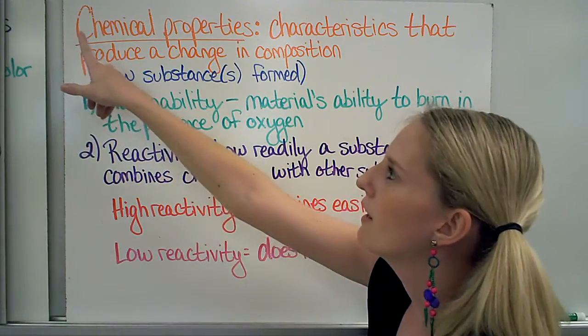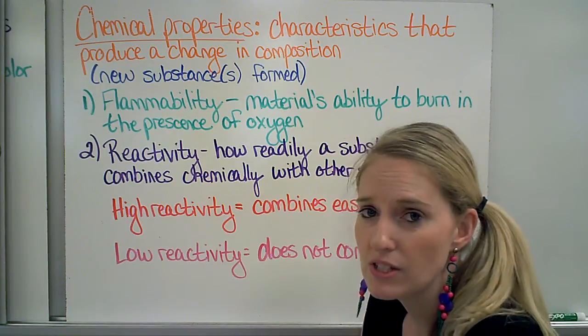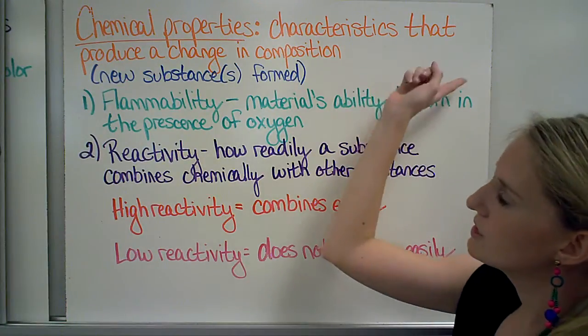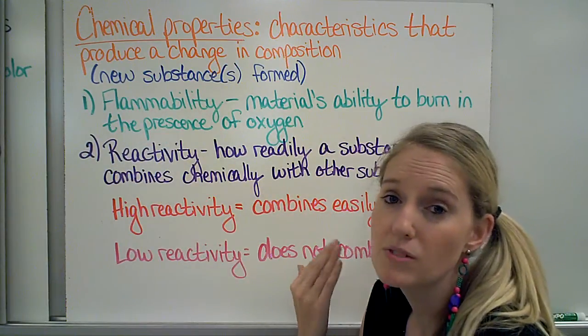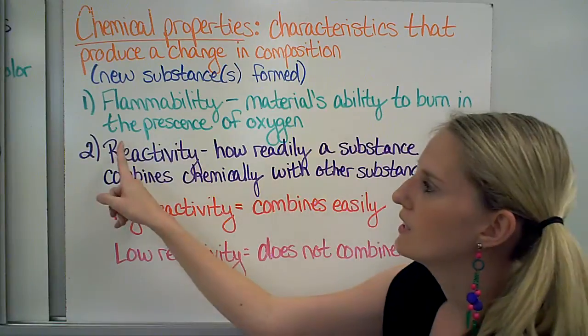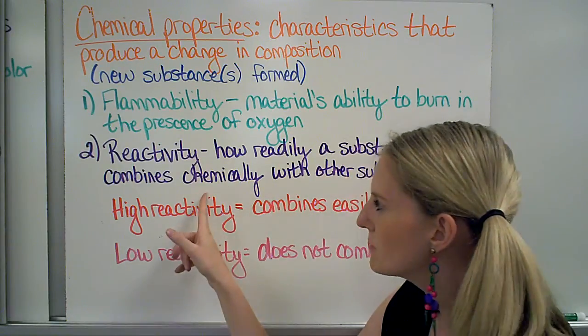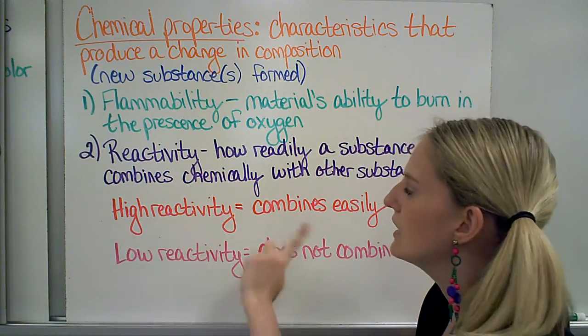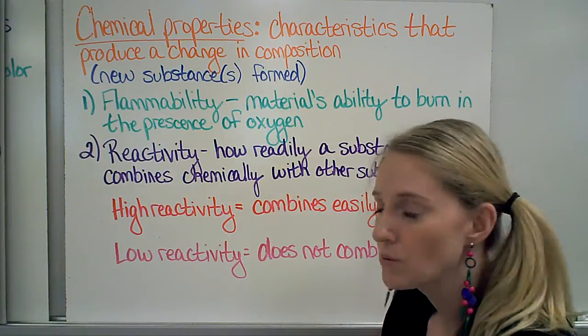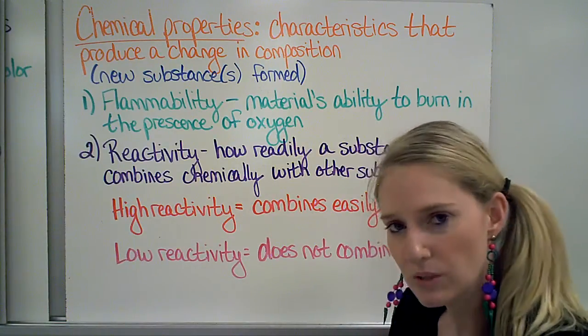Just as we had physical properties, we have chemical properties as well, but for these, I'm not going to be able to observe or measure them without changing the composition. Since we know it's chemical, that means we do change the composition if we observe these properties. So characteristics that can produce a change in the composition, so a new substance or substances will be formed. One example of a chemical property is flammability, which is the ability of a material to burn in the presence of oxygen. Another one is an object or material's reactivity, which is how readily it will combine chemically with other substances. Substances that have a high reactivity will combine easily with other types of matter. And if they have a low reactivity, they will not combine easily with other types of matter. Specific elements are going to have high reactivity and low reactivity once we start talking about bonding.